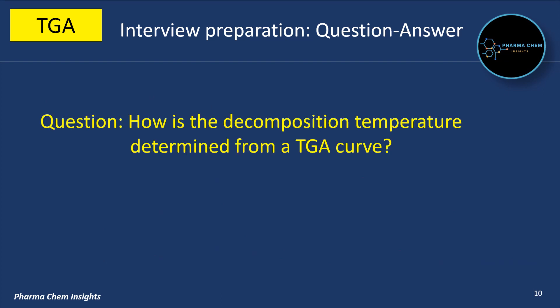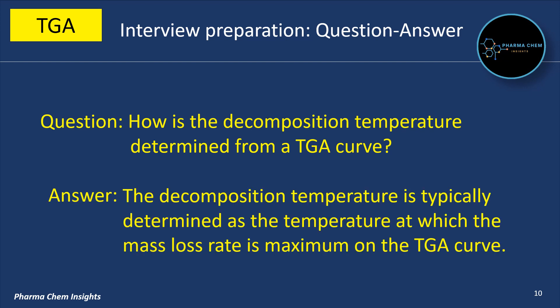How is the decomposition temperature determined from a TGA curve? The decomposition temperature is typically determined as the temperature at which the mass loss rate is maximum on the TGA curve.